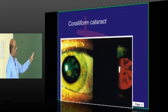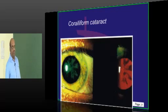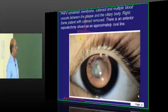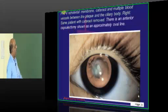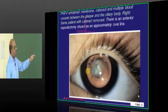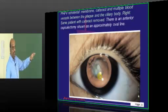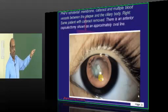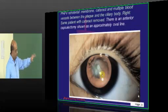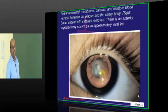There can be a persistent hyperplastic vitreous associated with posterior capsular or posterior polar cataract, as we said. This is the typical appearance of that presentation.